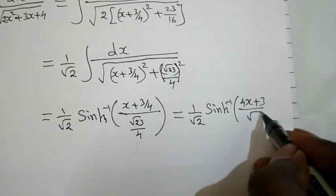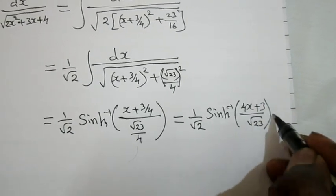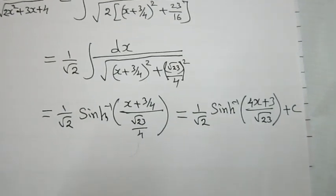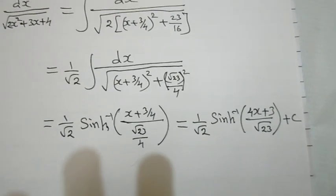The 4s cancel, giving the final answer as 1 by root 2 times sinh inverse of 4x plus 3 divided by root 23, plus the constant of integration. This is the answer to the problem.